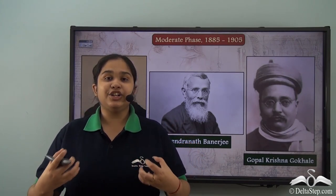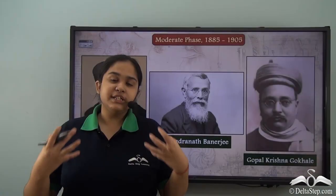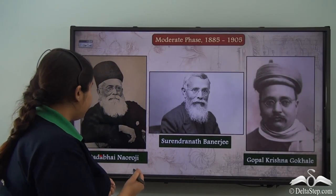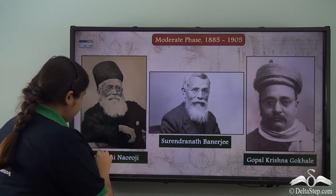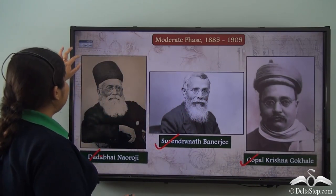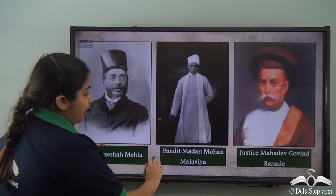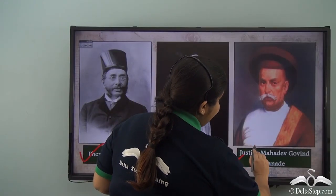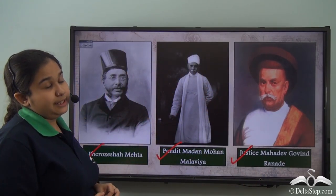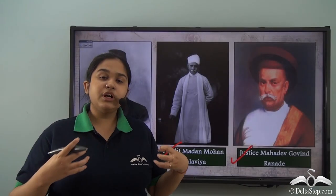The early nationalists' methods included mostly constitutional agitation. Key figures included Dada Bhai Naoroji, Surendranath Banerjee, Gopal Krishna Gokhale, Firoz Shah Mehta, Pandit Madan Mohan Malviya, and Justice Mahadev Govind Ranade, who led the early nationalist movement.